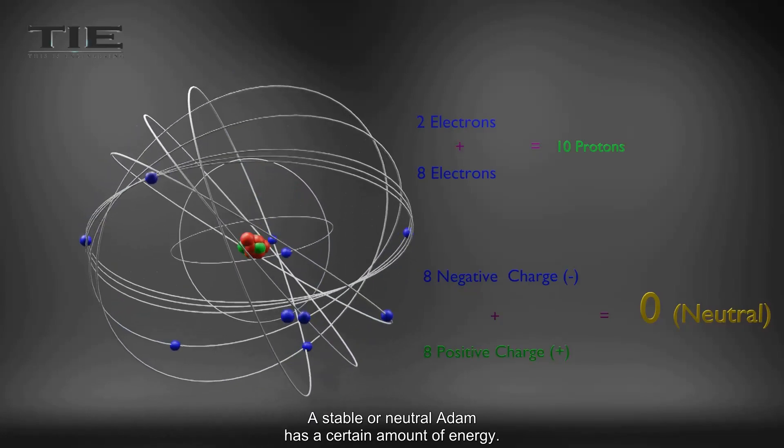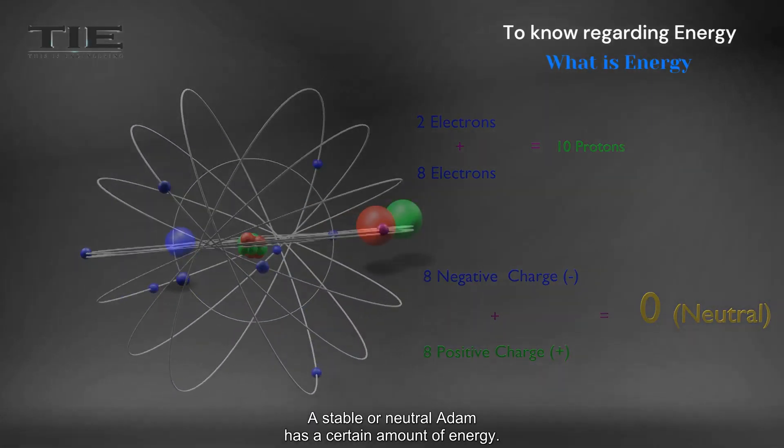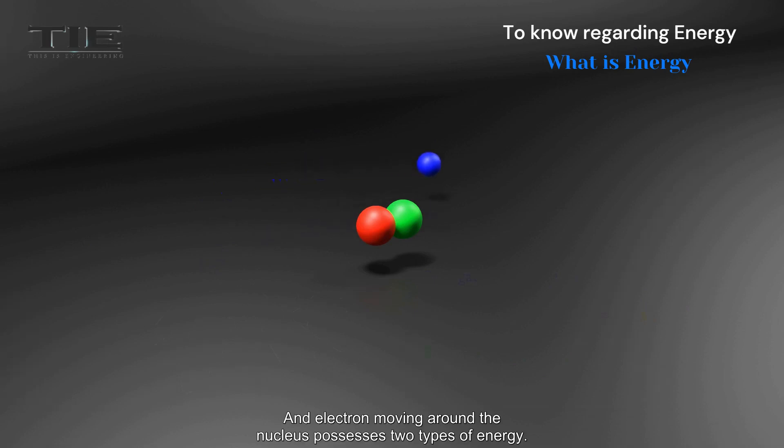A stable or neutral atom has a certain amount of energy. An electron moving around the nucleus possesses two types of energies.